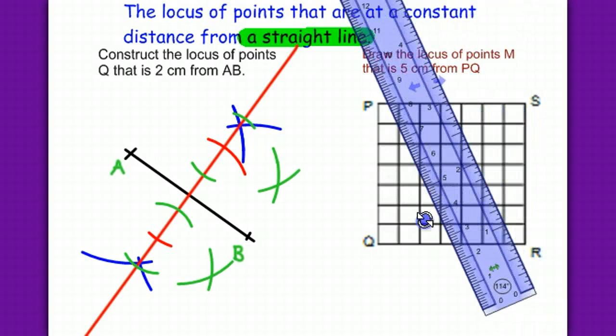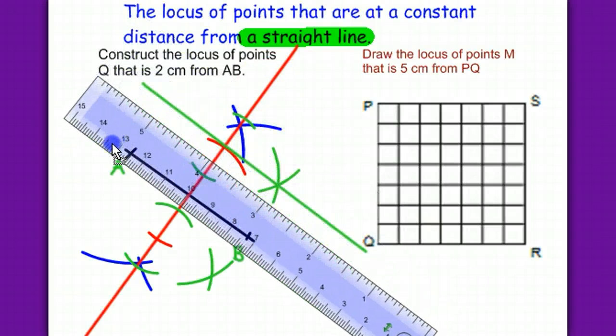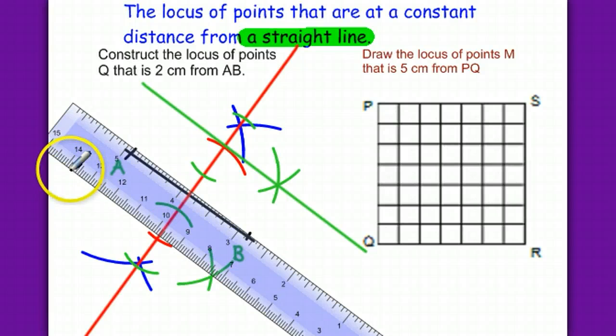Now, bring in the ruler. This blue line, this green line here is our locus, our first locus. And here, so we have two lines, up and down.